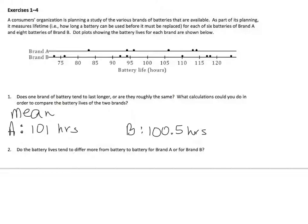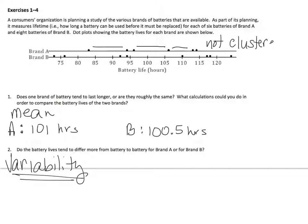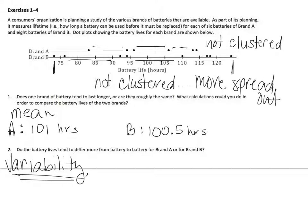Do the battery lives tend to differ more from battery to battery for brand A than for brand B? Now, we're talking about variability, which is the variability between the batteries for brand A and brand B. If I look, brand A, I've got a lot of difference between the batteries. They're not really clustered together. And then if I look at brand B, it's even more variable, because I'm all the way down there to up here. So, not clustered for B either, but even more spread out. So, the variability would be considered greater for battery B.